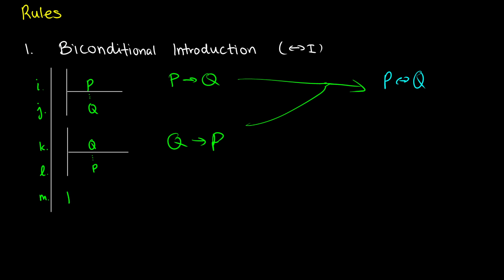So in line M here, we would be able to write P if and only if Q. To justify this, we'd say we have a proof from I to J that if P then Q, and we have a proof from line K to L that if we have Q then P, and this is just biconditional introduction. In a way it's kind of like or elimination in that you're making two sub proofs, but we don't need an initial assumption here — we can just assume P at any time, assume Q at any time, and as long as we can get that each of them proves the other, then P and Q are essentially the same.